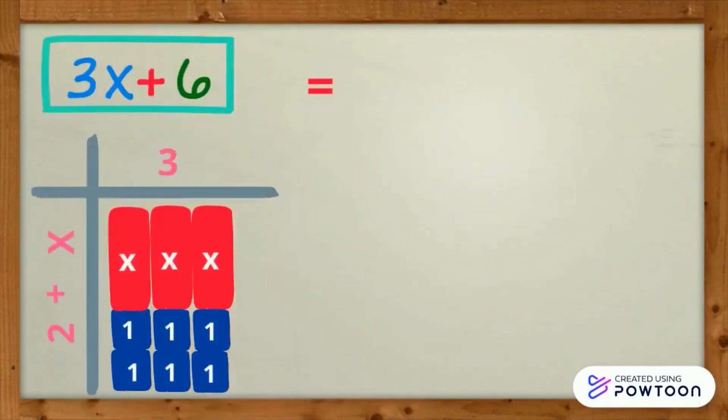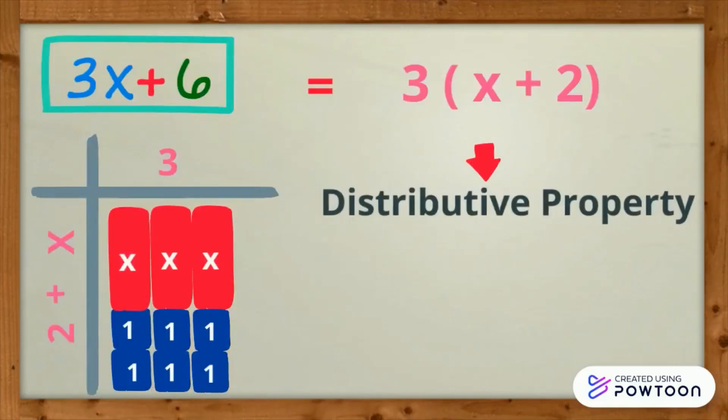The factors of 3 quantity x plus 2 can be checked using the distributive property of multiplication. 3 times x is 3x and 3 times 2 is 6. There you go.